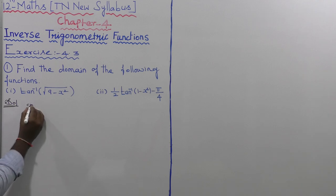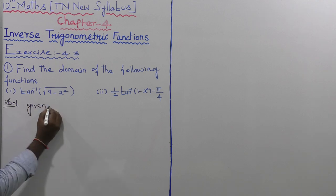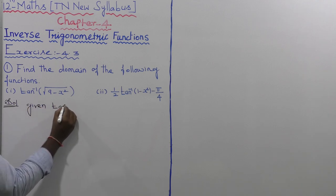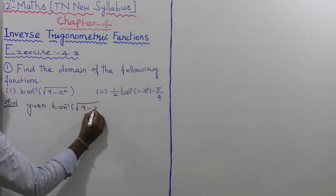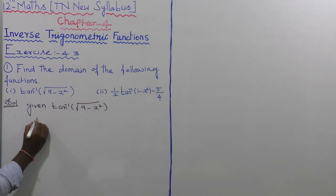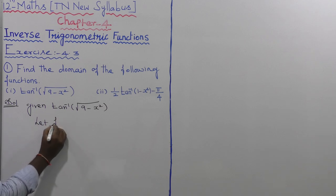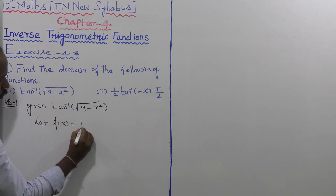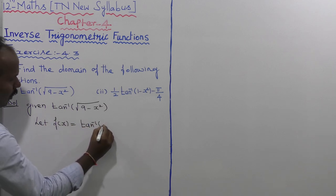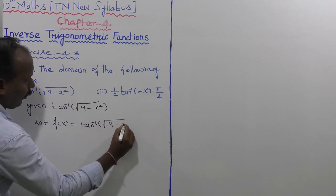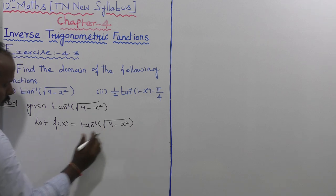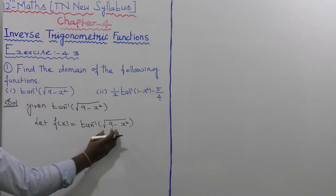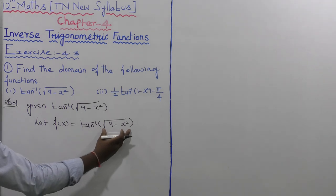The given function, first subdivision: let us consider f of x, that is equal to tan inverse of root of 9 minus x squared. Let us take this x value — arbitrary values.